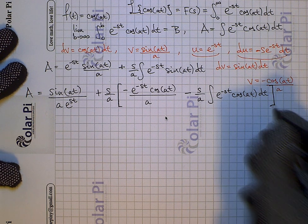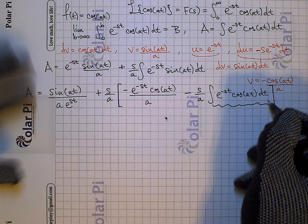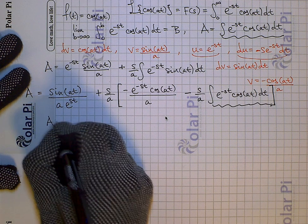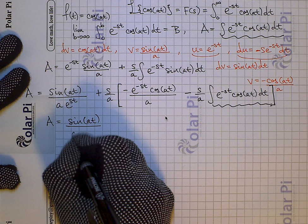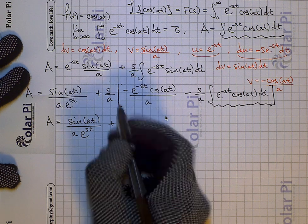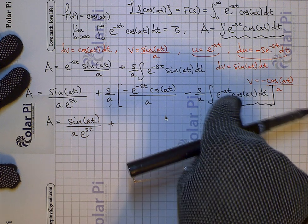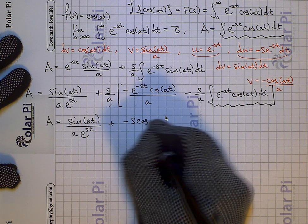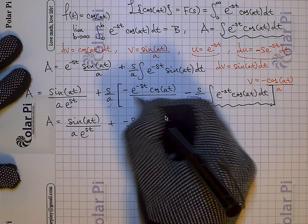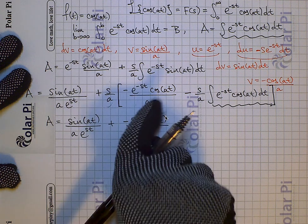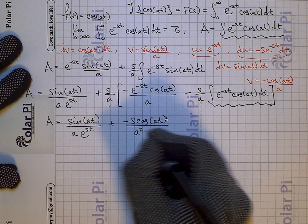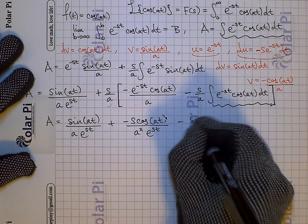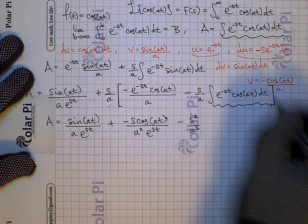But wait — look at this here. This integral here is identical to capital A up there. So this here is our integral capital A. How nice. Because next, we can write A equals sine of at divided by a times e to the st, and then distributing s over a both to this term and to that term. From this part we get negative s cosine of at over a squared times e to the st, and distributing over here we get minus s squared over a squared times capital A.